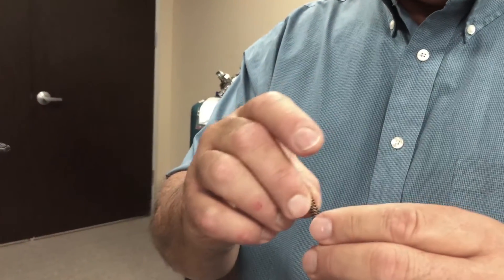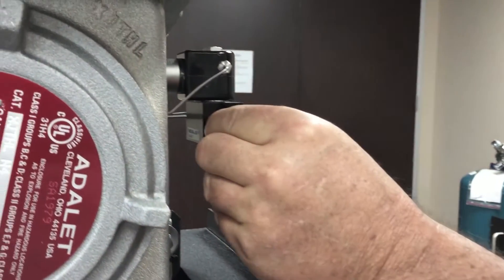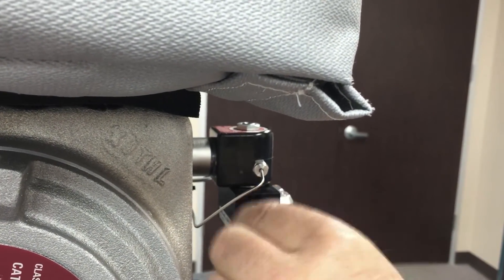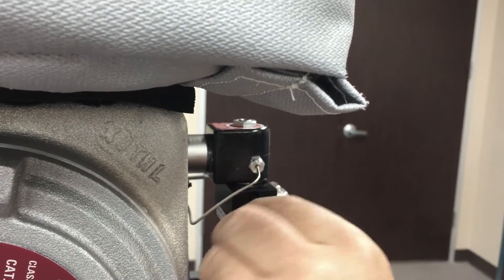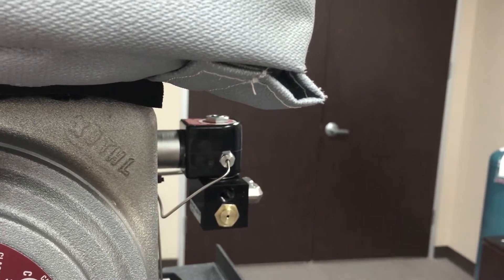We're going to take the new spring cap, place the spring in it, insert it, tighten it down. And then using the 9-16 inch wrench, we'll just snug it down.